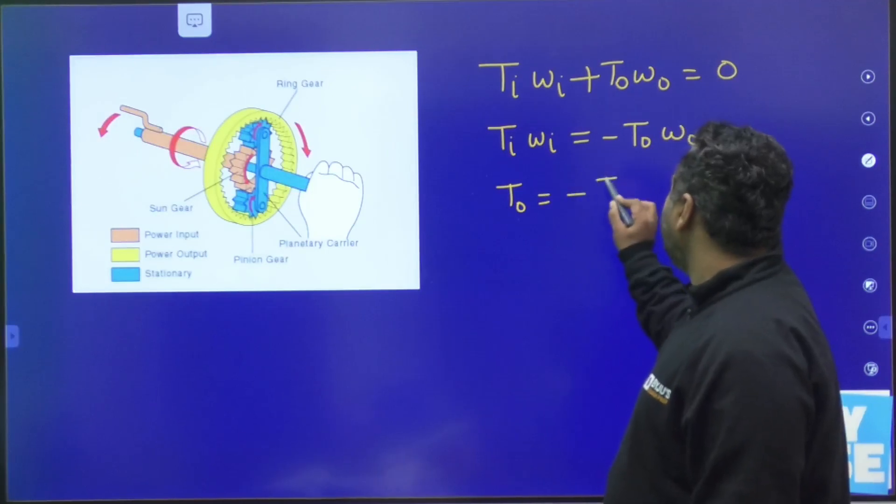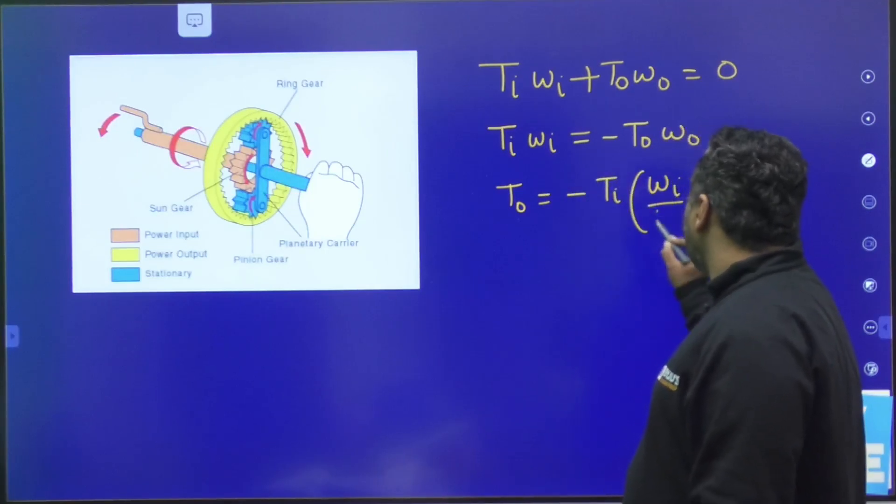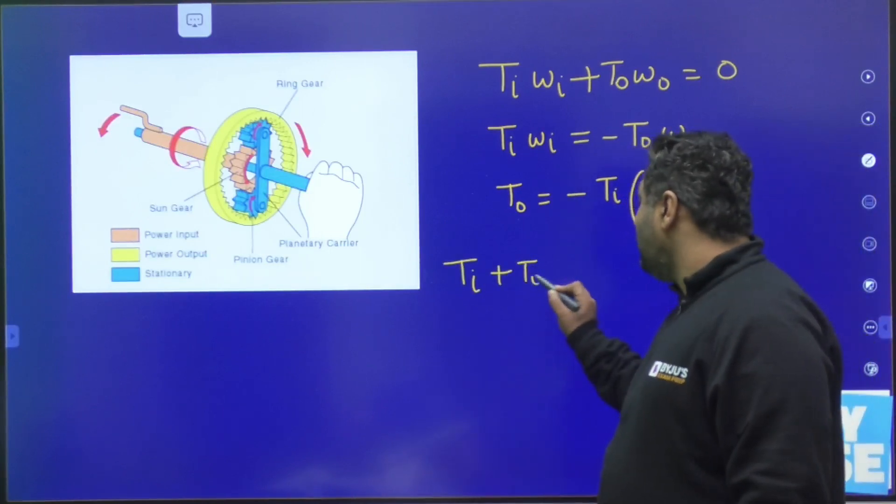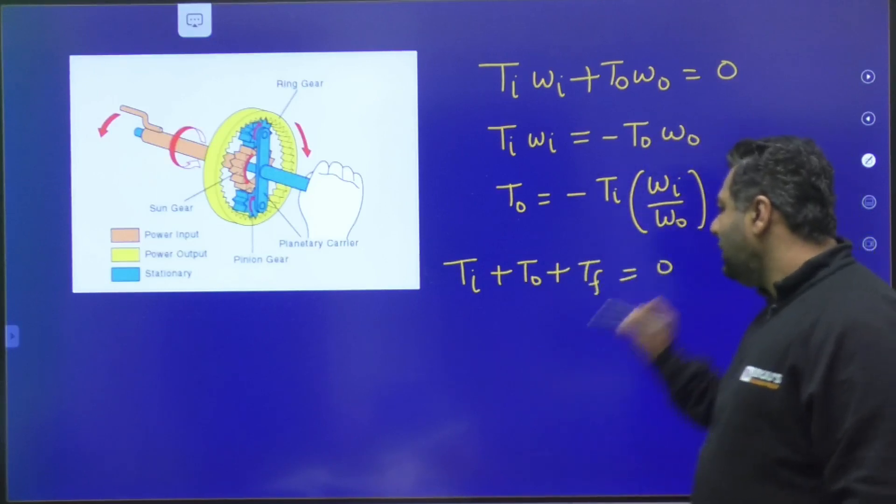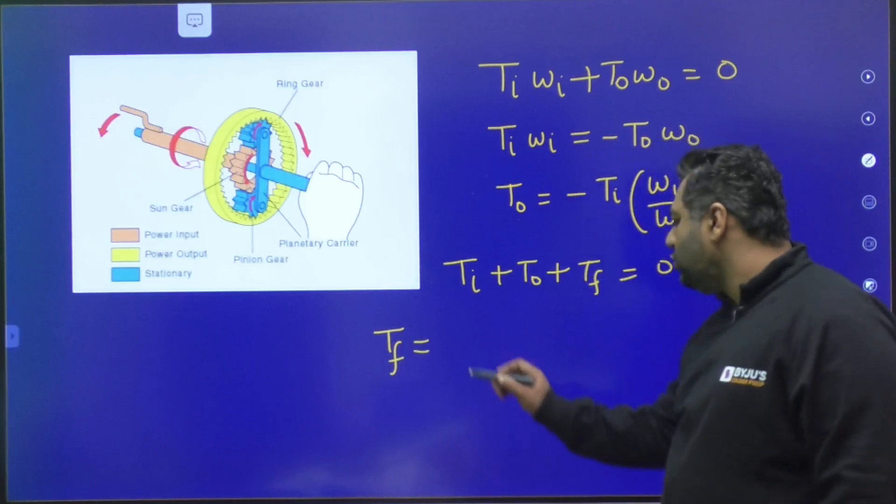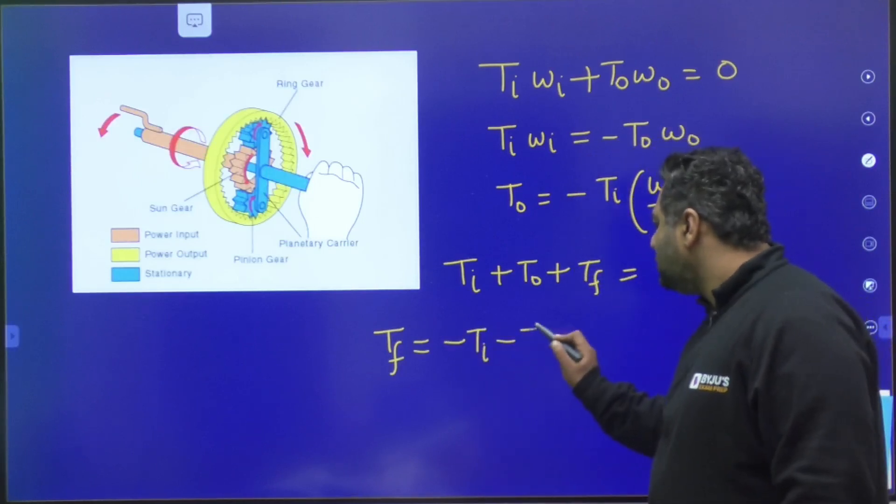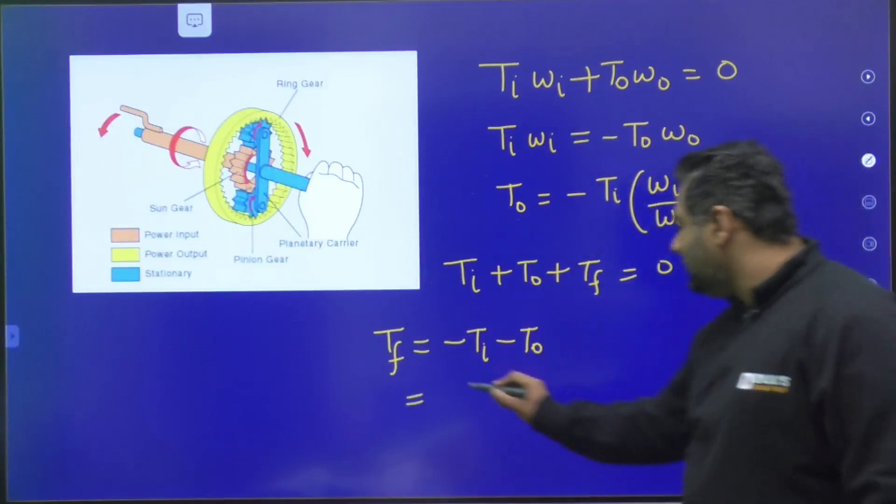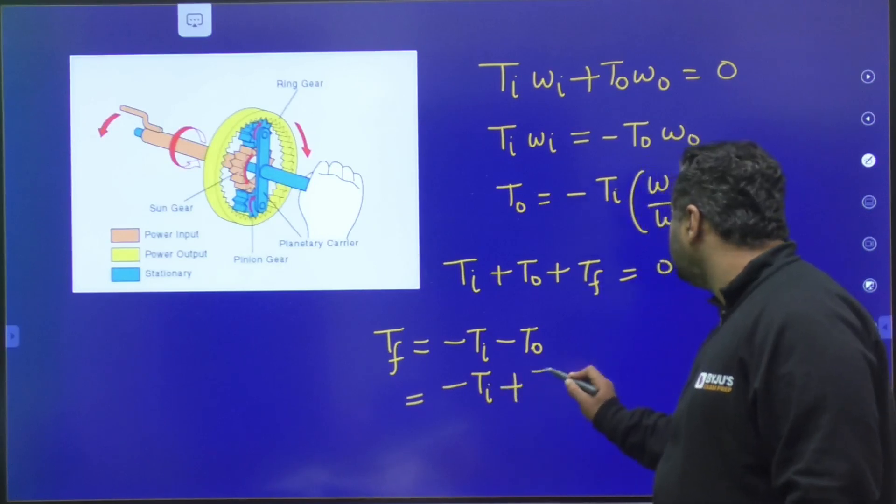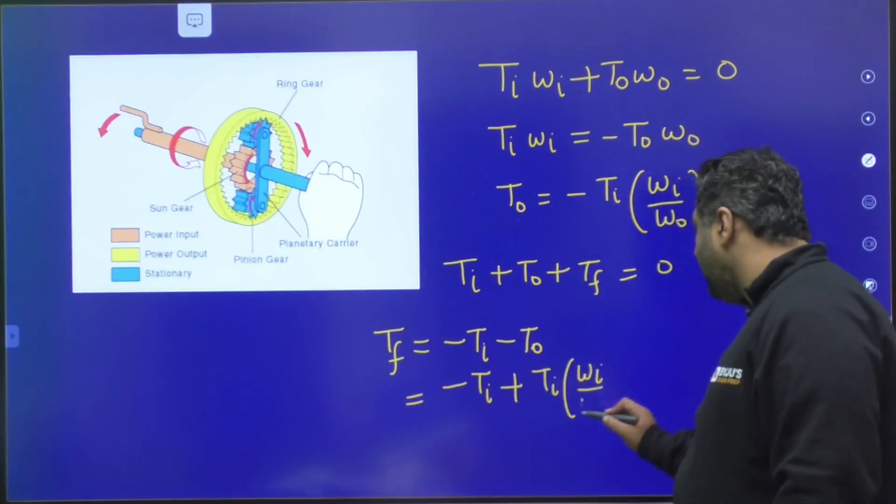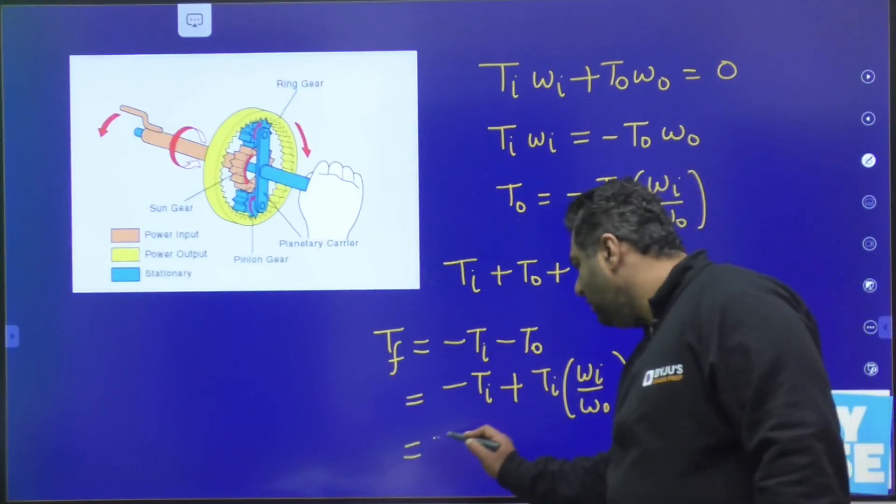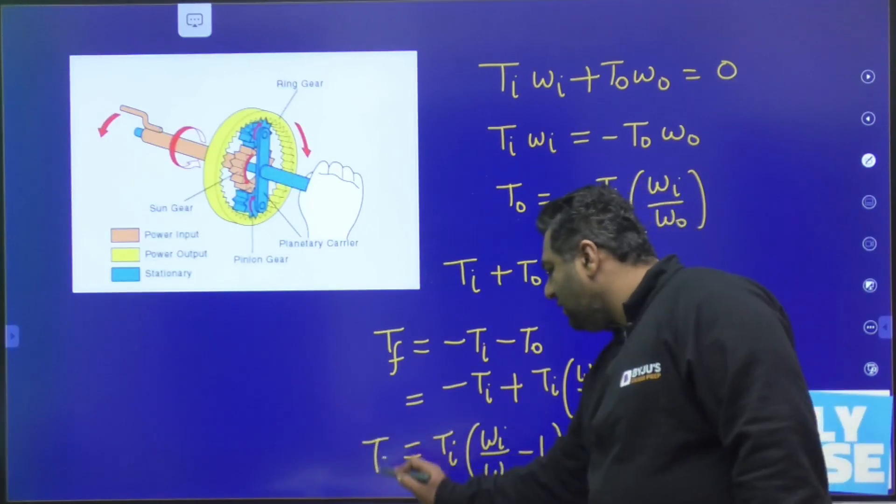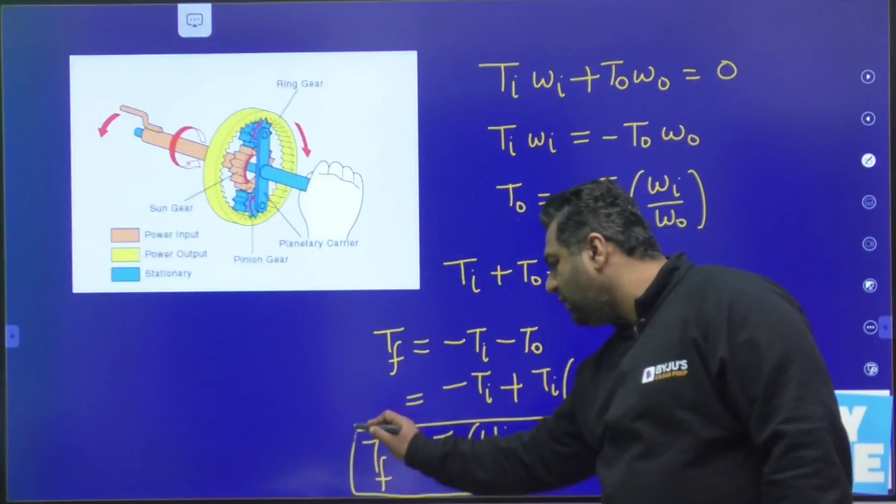That is going to be minus T_i into omega_i by omega_o. So once you have this value, you know the second equation: T_i plus T_o plus T_f is equals to zero. So you can derive the direct formula for fixing torque. It is going to be minus of T_i minus of T_o. You already know what is the T_o value. If you are having T_o value, this is minus of T_i. T_o value will be plus T_i omega_i by omega_o. So you can directly write T_i into omega_i by omega_o minus one. So this is the direct formula of fixing torque. You can use this as a short trick formula for the fixing torque.